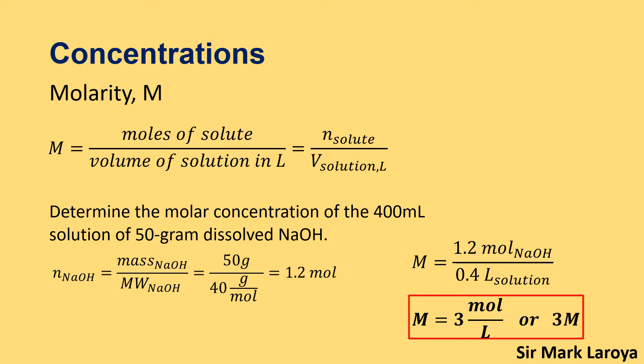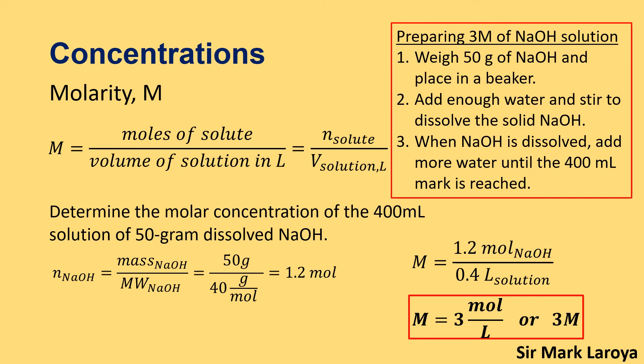So how do we prepare this solution with a particular molarity? We prepare 3 molar NaOH solution by first weighing 50 grams of NaOH — sodium hydroxide, usually in the form of pellets — and placing it in a beaker. We add enough water to dissolve the solid NaOH by stirring. When the NaOH is dissolved, we add more water until we reach the 400 ml mark. That 400 ml is the volume of our solution, giving us a molarity of 3 molar.